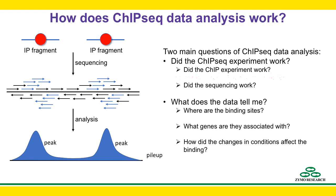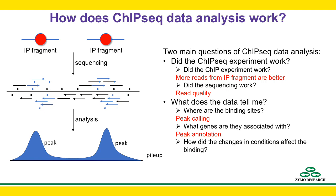Now let's go back to the questions. A good ChIP experiment produces more IP fragments and less background DNA. Therefore, we can evaluate a ChIP-seq experiment by the fraction of reads coming from the IP fragments. We can evaluate read quality to see whether the sequencing worked as intended. The peak calling process will identify the binding sites of the protein of interest. We can analyze what genes are near those peaks to identify genes potentially affected by the protein of interest — this process is known as peak annotation. Finally, if we compare the number of reads in the same peak under different conditions, we can infer how changes in conditions affect the protein binding.